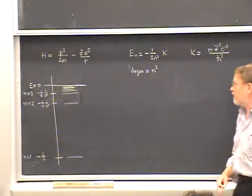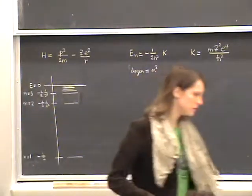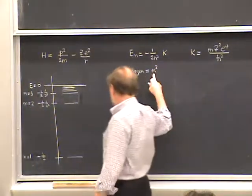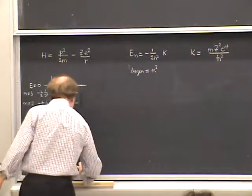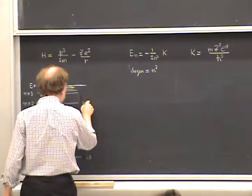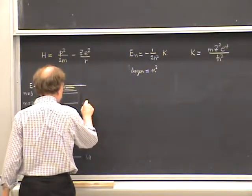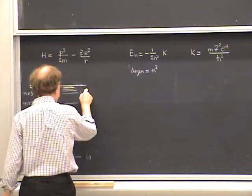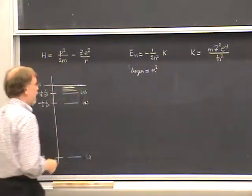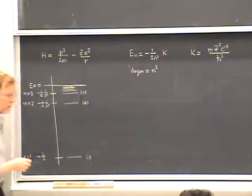As a result, there's an infinite number of levels that accumulate. Last time I also resolved these levels by angular quantum number, but I'm not doing that here in this diagram—I'm just giving energy levels. The degeneracy of these levels is n-squared: the ground state has degeneracy one, for n equals two it's four, n equals three it's nine, and so on.